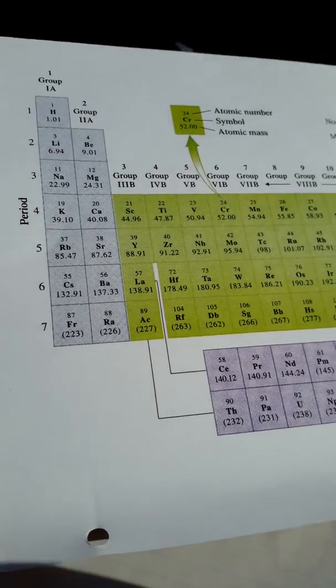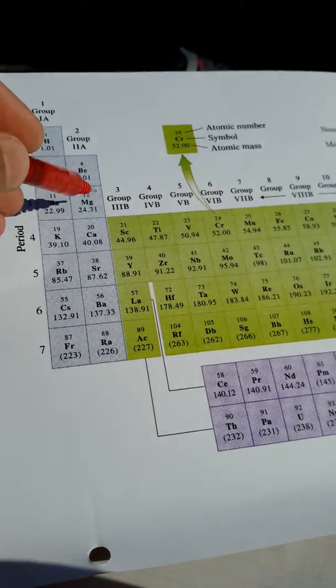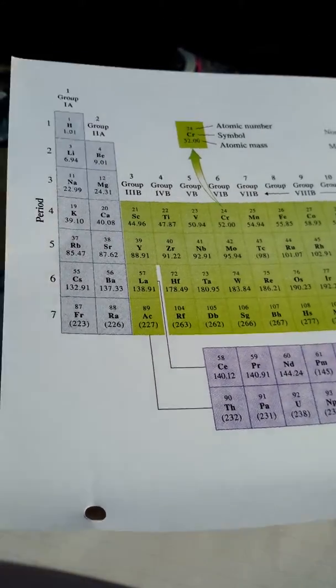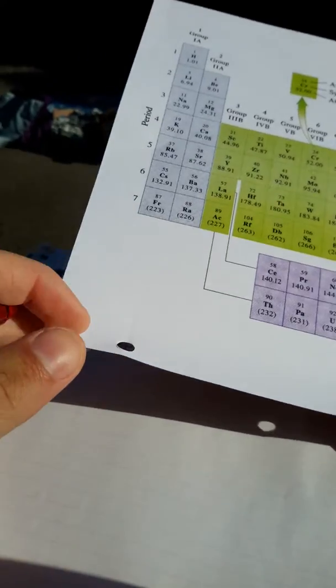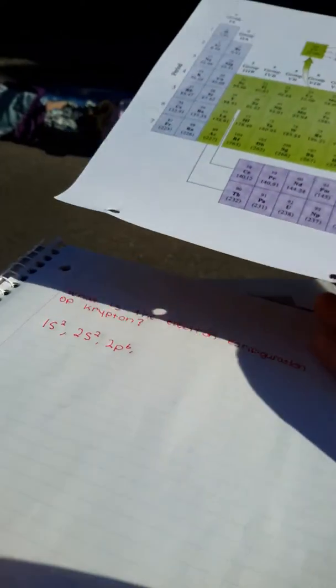This is the third row and this is the S block, and there are two atoms, so we write 3s2.